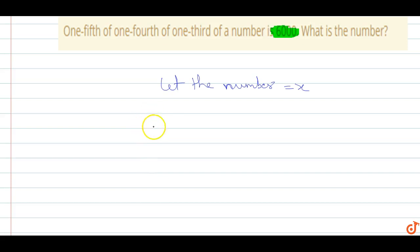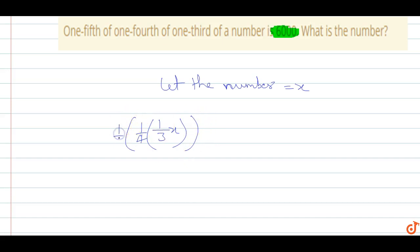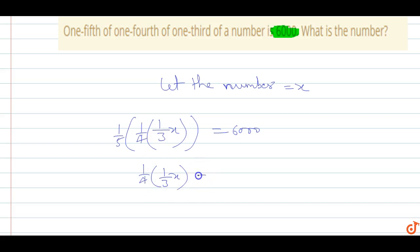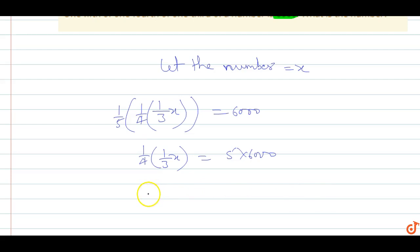So one-third of the number, into one-fourth of that number, into one-fifth of that number equals six thousand. This gives us X divided by one-fifth, one-fourth, one-third, which equals one by four into one by three into X equals five into six thousand.